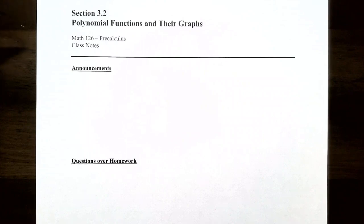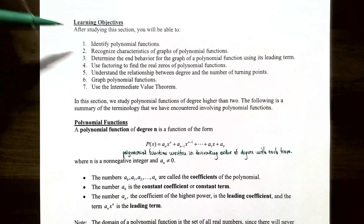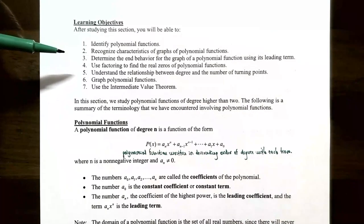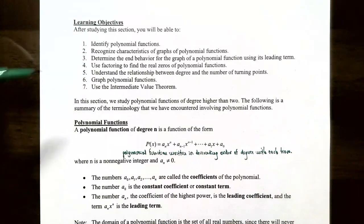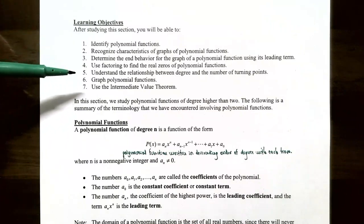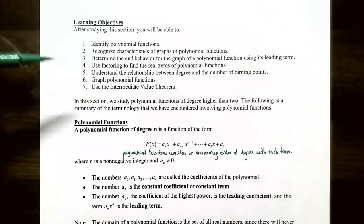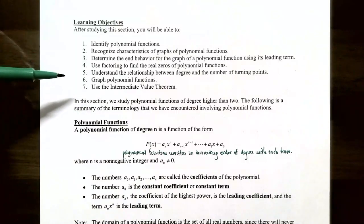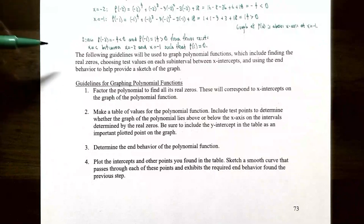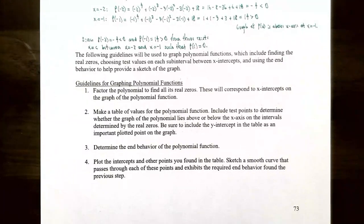Hi everyone, it's Professor Permanent and in this video we're going to finish up our discussion on polynomial functions and their graphs. In the previous video we talked about how to identify polynomial functions, recognize characteristics of their graphs, end behavior using the leading term, and using factoring to find the real zeros. In this video we'll discuss the relationship between degree and turning points, and we'll graph polynomial functions using real zeros, test values on sub-intervals, and end behavior.